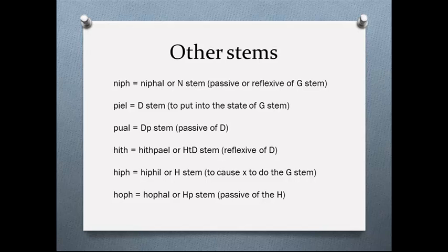You get the concept now. By making modifications to the basic three-letter stem — putting an N on the front, or doubling the second consonant in the D stem, or putting an HT and doubling the second consonant, or putting an H on the front — you change the nuance of the verb. Sometimes it works neatly in the way described, and sometimes the word does its own thing and you just have to memorize that in the H stem this word means this. But the H stem will generally have some kind of causative flavor to it.